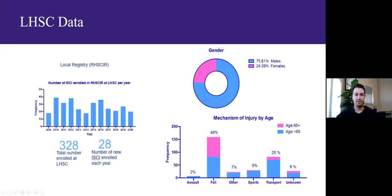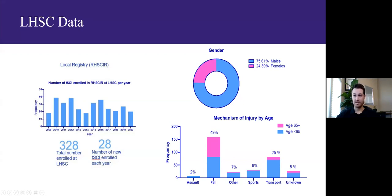Jennifer Urquhart, our local contact at LHSC for the Rick Hansen Registry, put in a request at the national level to get us some site-specific data. On average we have about 28 patients admitted per year — roughly 75% males and 25% females, similar to national averages. In terms of mechanism, falls are our most common etiology particularly in elderly patients, with transport-related MVCs a close second.